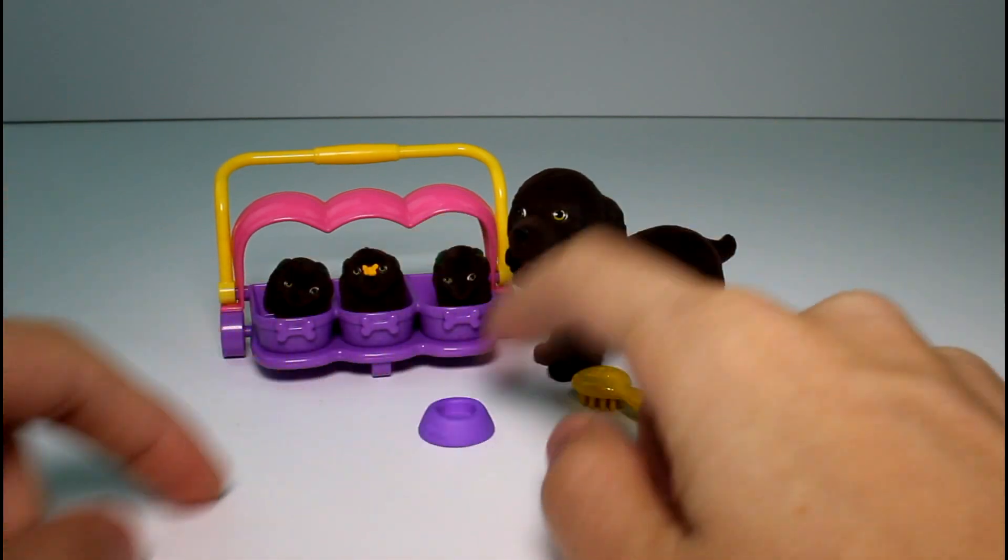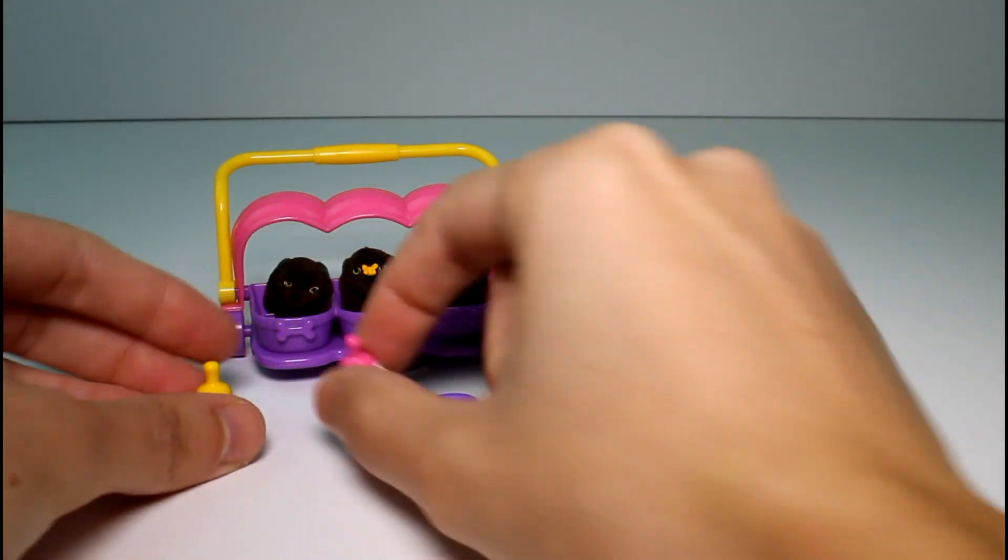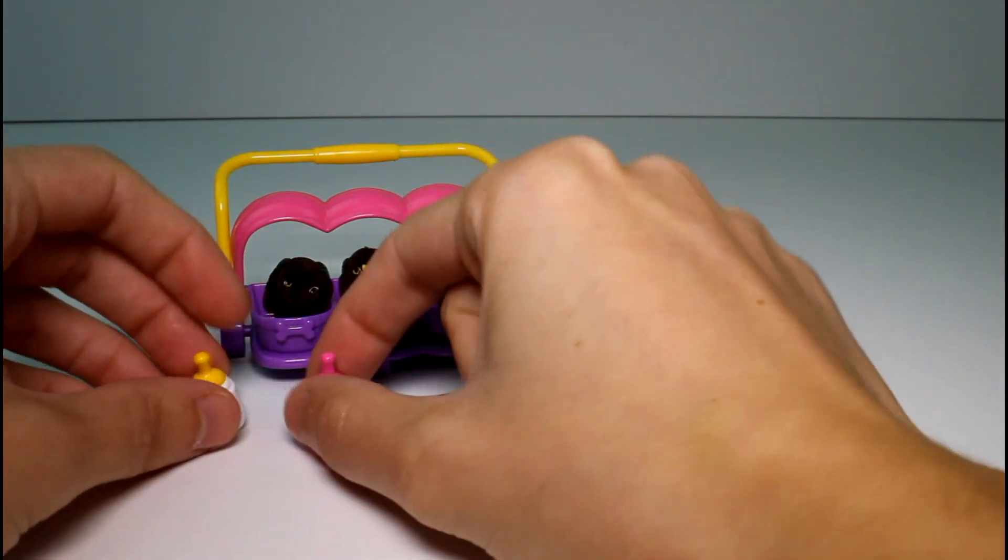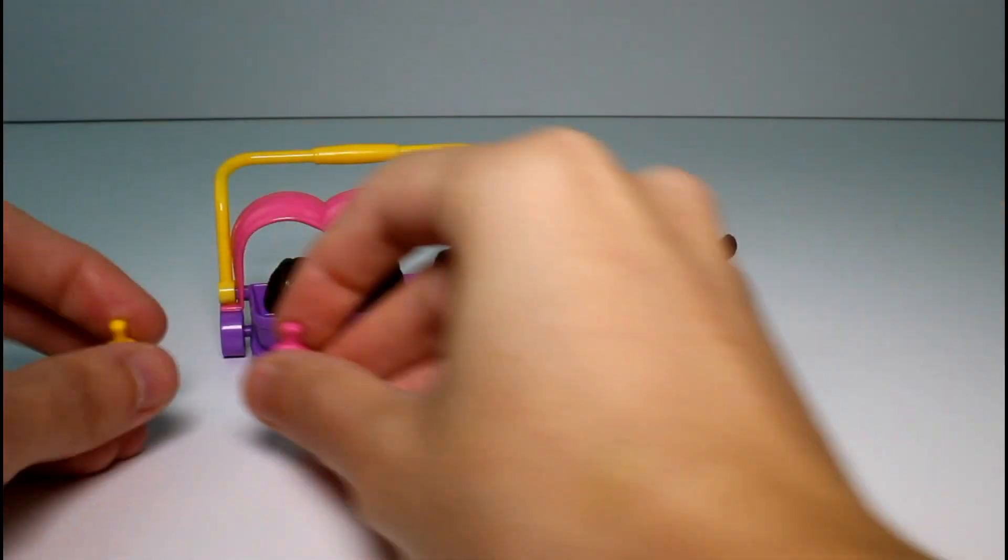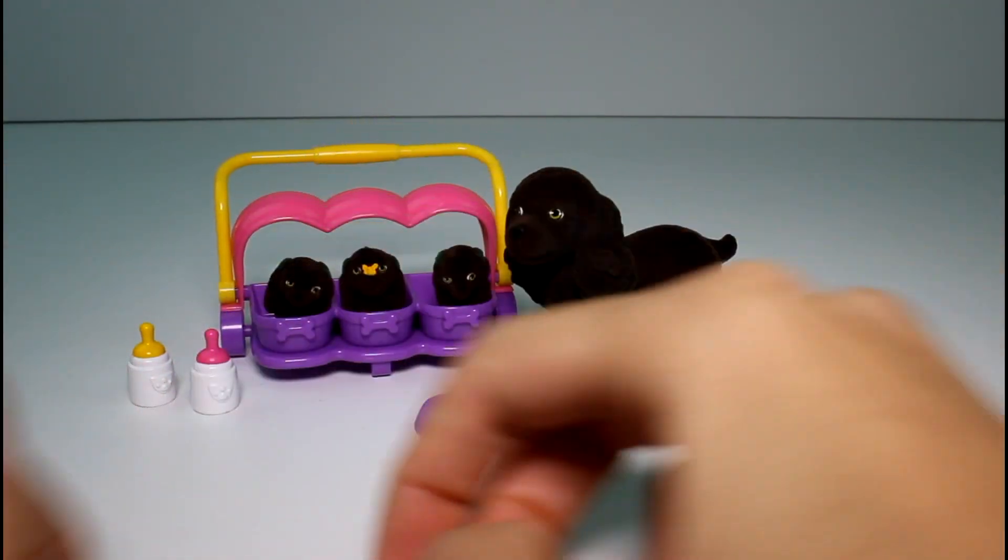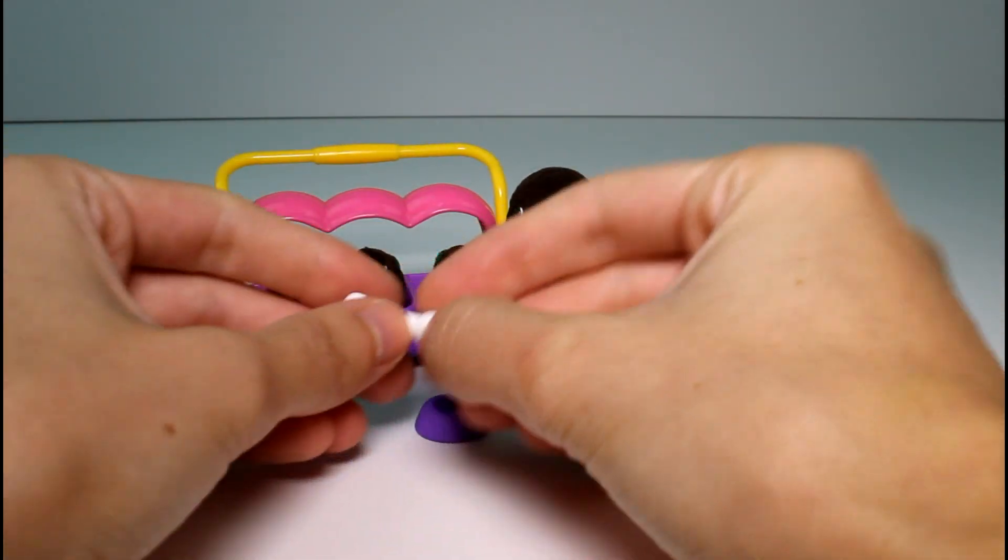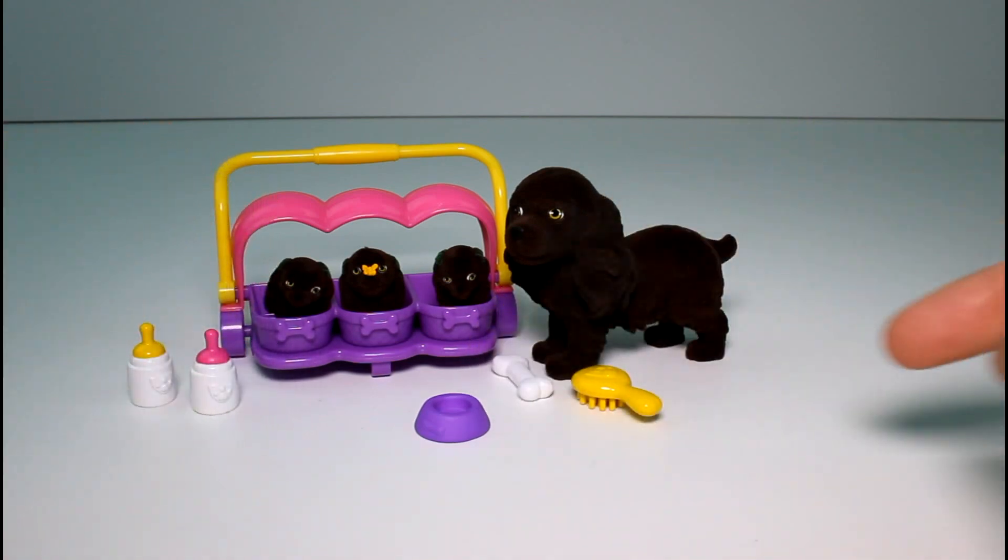And then we have a little bowl for food and we have two bottles which I don't know why we just have two bottles. There's three babies. You can feed them like that or even mom if she wants a little drink. And then the last thing we have is a little dog bone for mom for when the babies go to sleep.